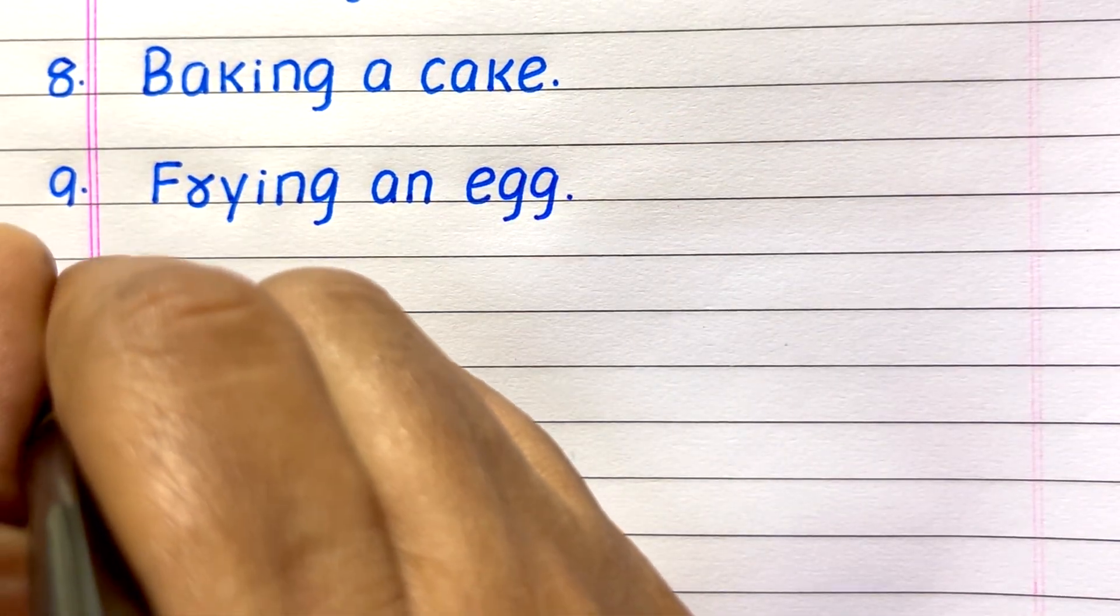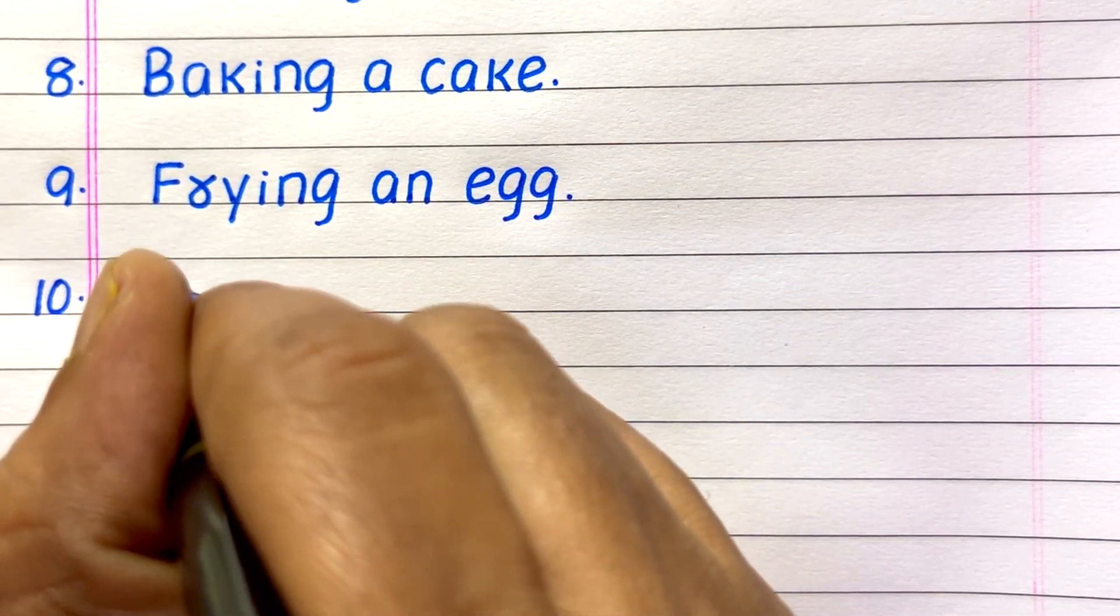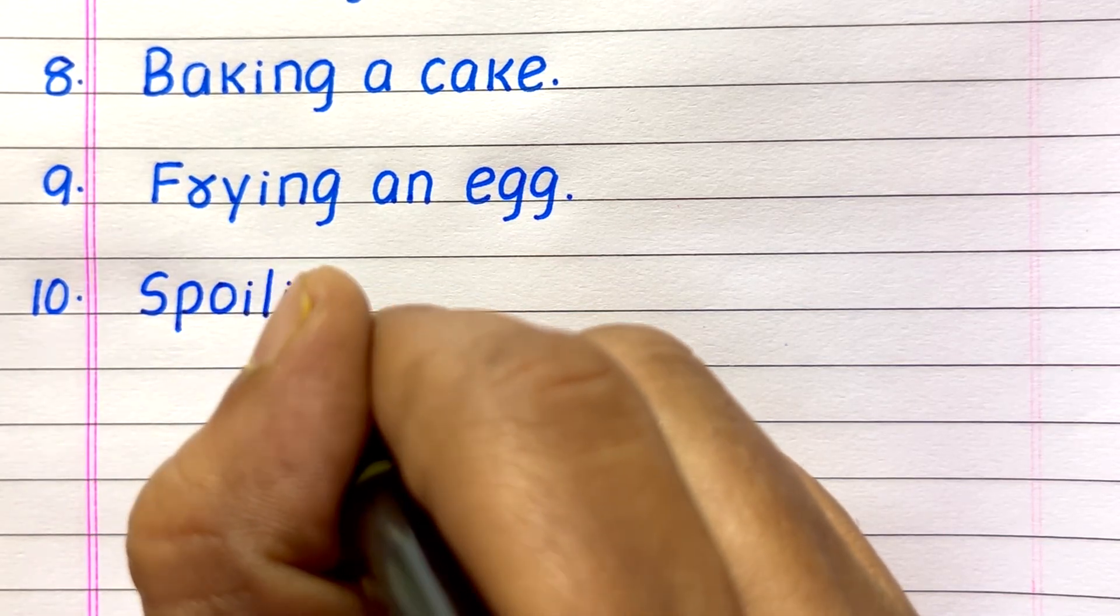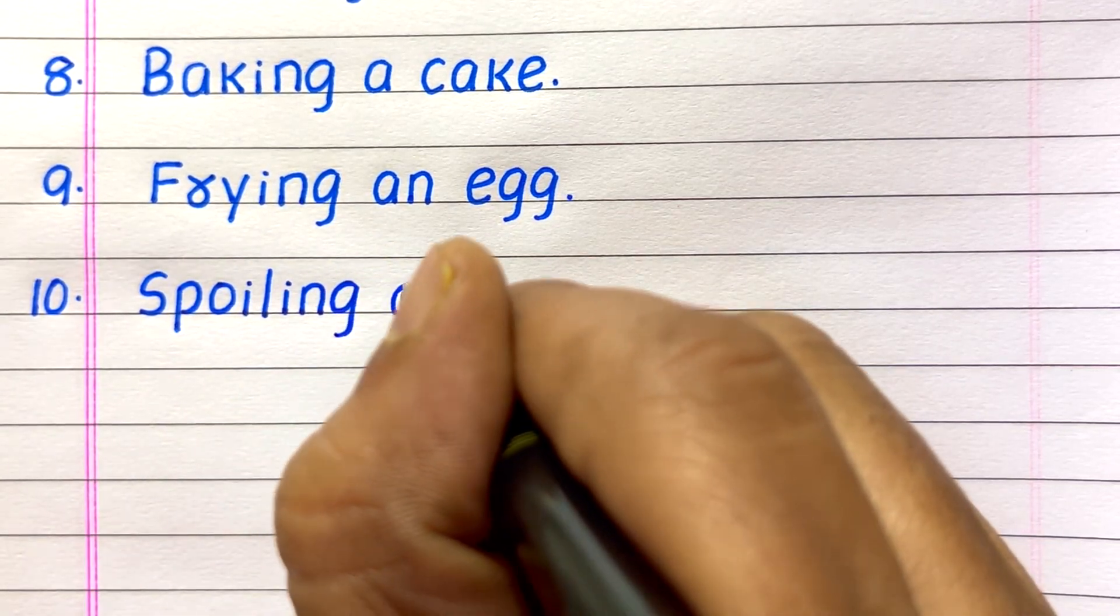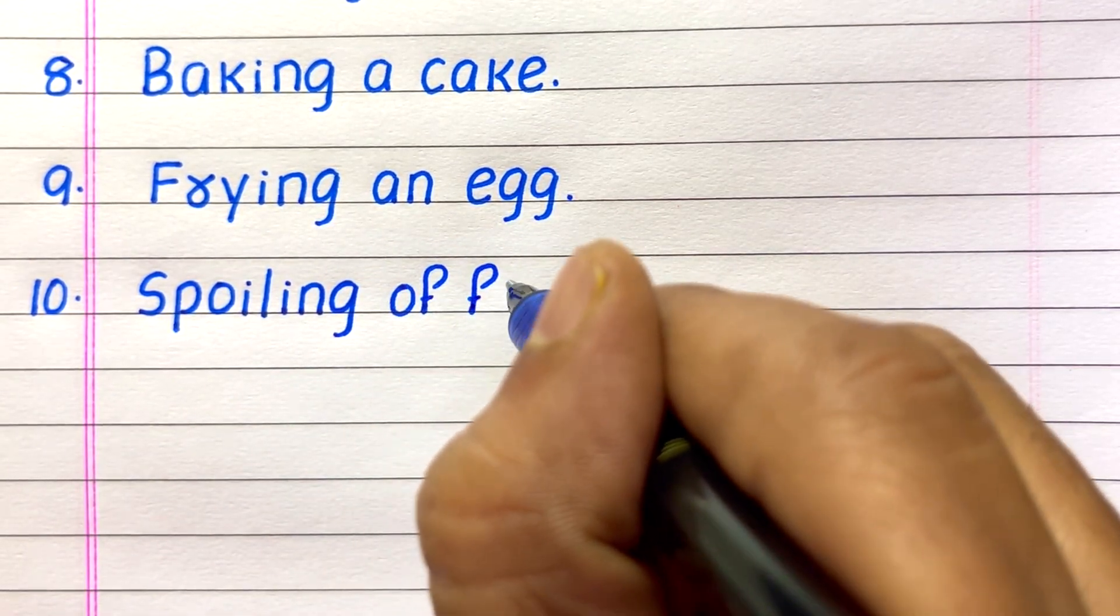Eighth example of a chemical change is baking a cake. Ninth, frying an egg. Last one, tenth, spoiling of food.